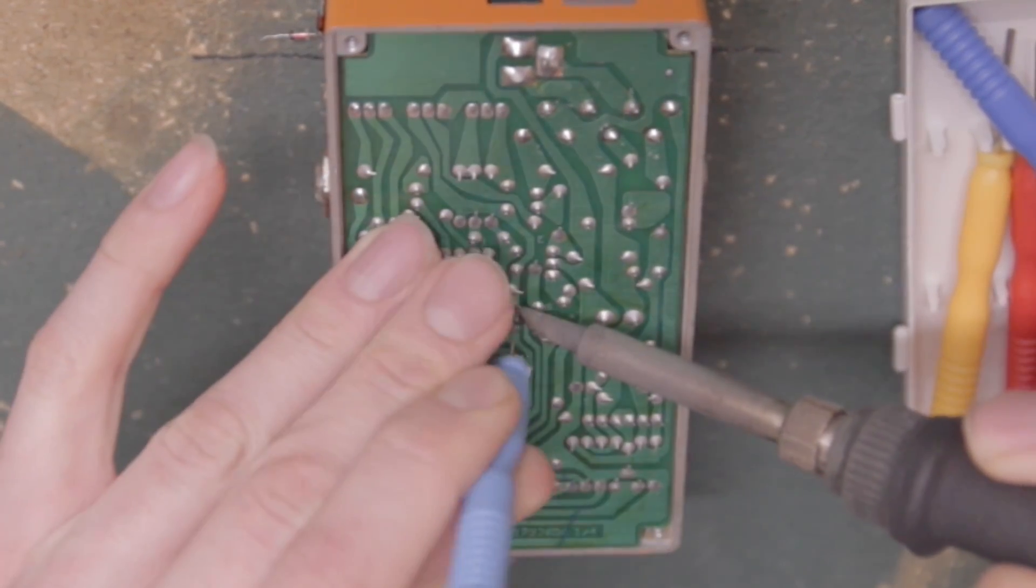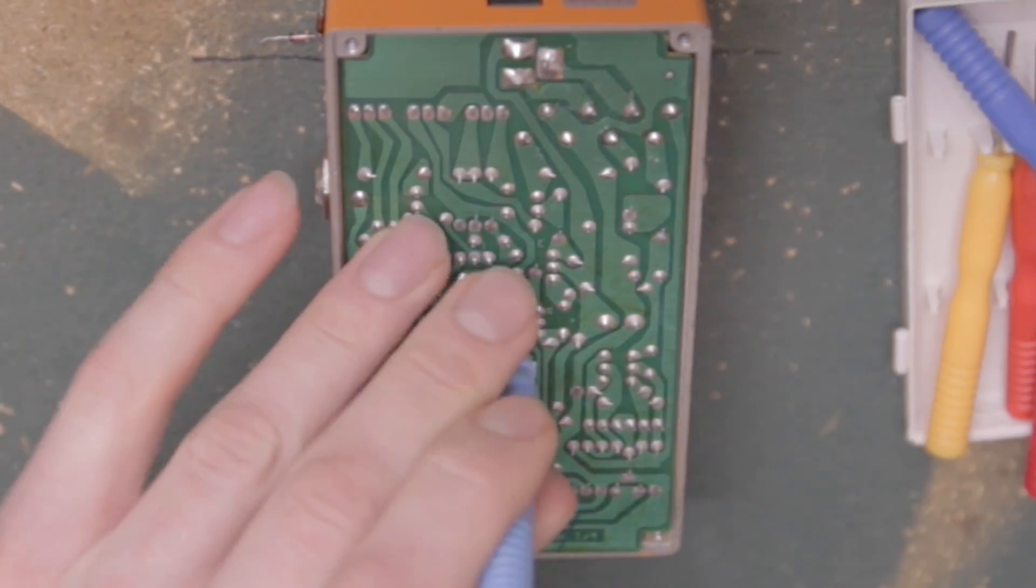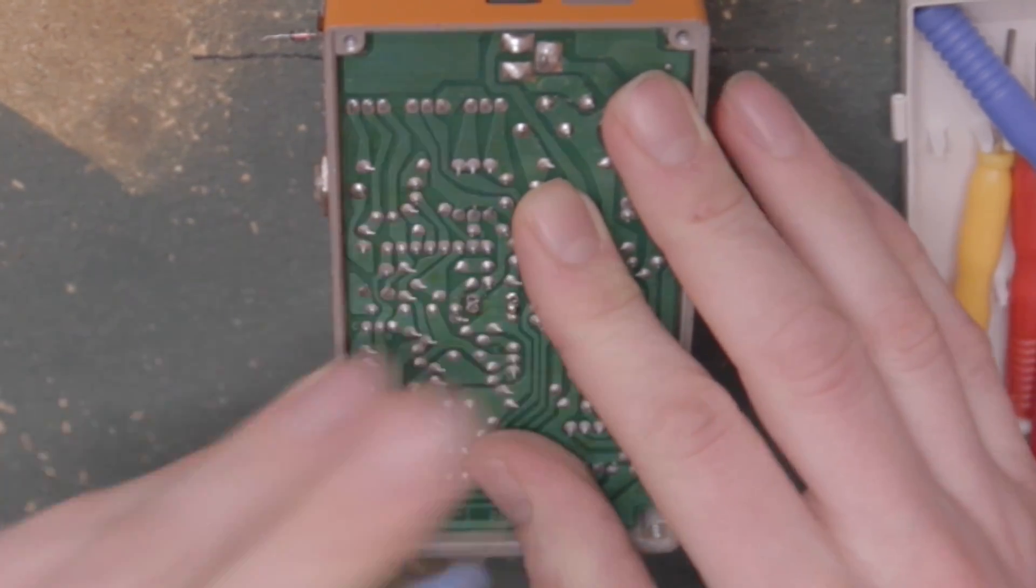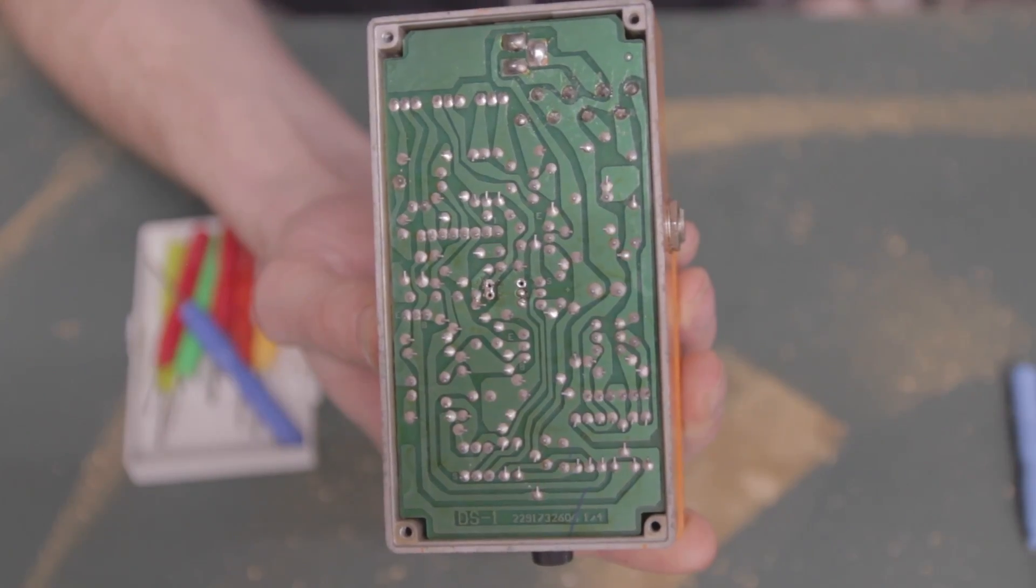Grab a small size needle, orient it in the pad, heat it up, and push it through. Rotating the needle helps a bit. Look how clean the hole is.